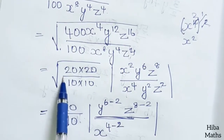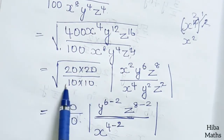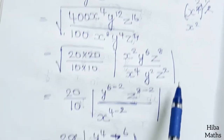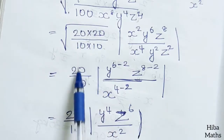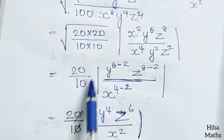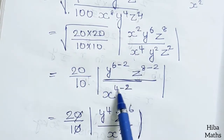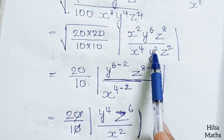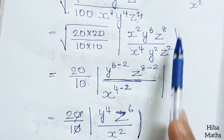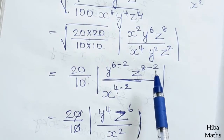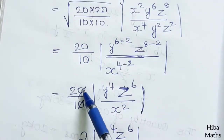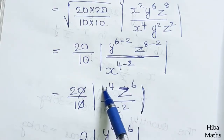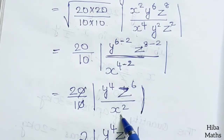To recap: the square root of 400 is 20, and the square root of 100 is 10. The variable powers are divided by 2. This gives us powers of 2, 6, 8 in the numerator and 4, 2, 2 in the denominator. After subtraction: y power 6 minus 2 equals 4, z power 8 minus 2 equals 6, and x power 4 minus 2 equals 2 — confirming the answer.